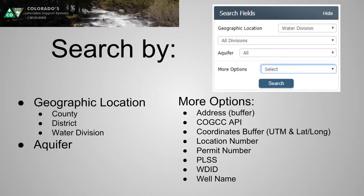This search box varies by tool. Specifically for the geophysical log tool, you've got geographic location search, which is primarily county, water district, and water division. You can also search by aquifer — so if you only care about the Laramie-Fox Hills, you can limit your search to those. Under more options, you can do a coordinate buffer, an address buffer, or if you know the well name and permit number, you can search specifically for that log.